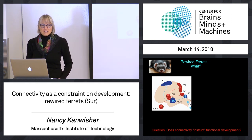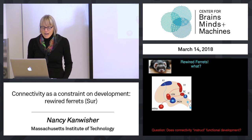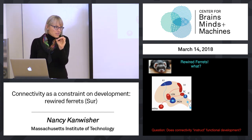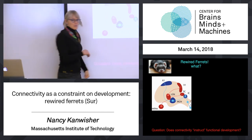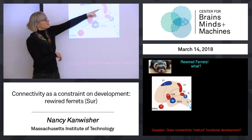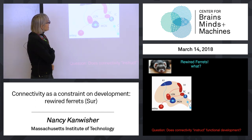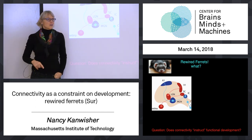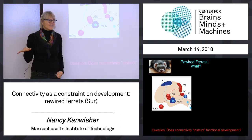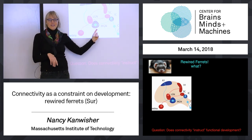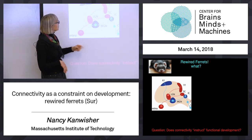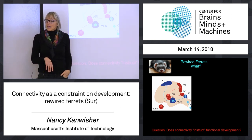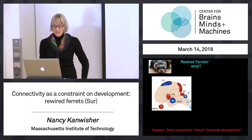They used ferrets because they're born very prematurely. You can operate on them surgically right at birth before they have any visual experience — they haven't opened their eyes yet — and you can reroute some of the connectivity. The normal wiring is: retina going to the lateral geniculate nucleus and then up to V1. There's also primary auditory cortex, just like V1 but for hearing — A1 — which connects through the medial geniculate nucleus in the thalamus up to A1. That's the basic wiring of an adult ferret.